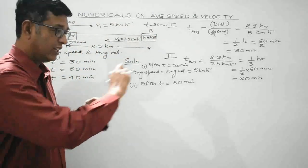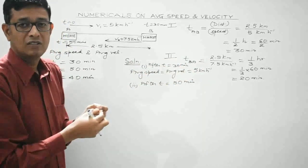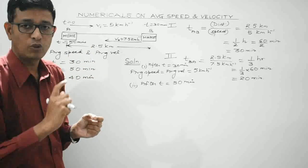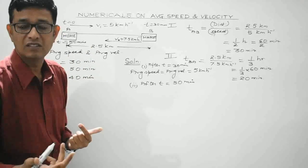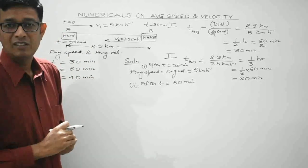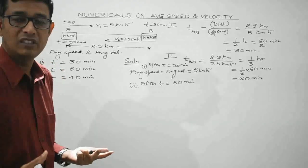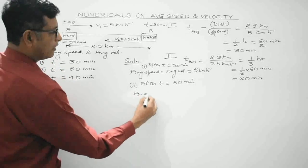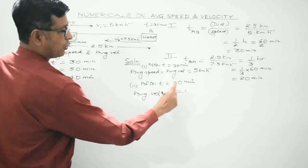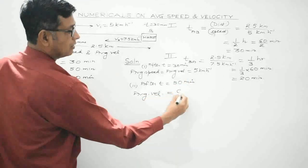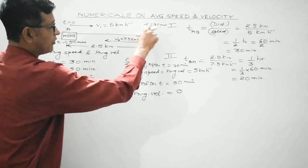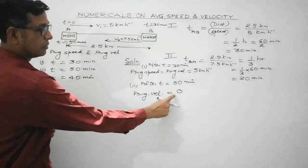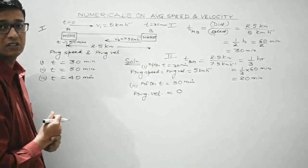During the entire interval of 50 minutes, the person's initial position coincides with his final position. Therefore displacement is 0, and average velocity throughout the entire journey is also 0.